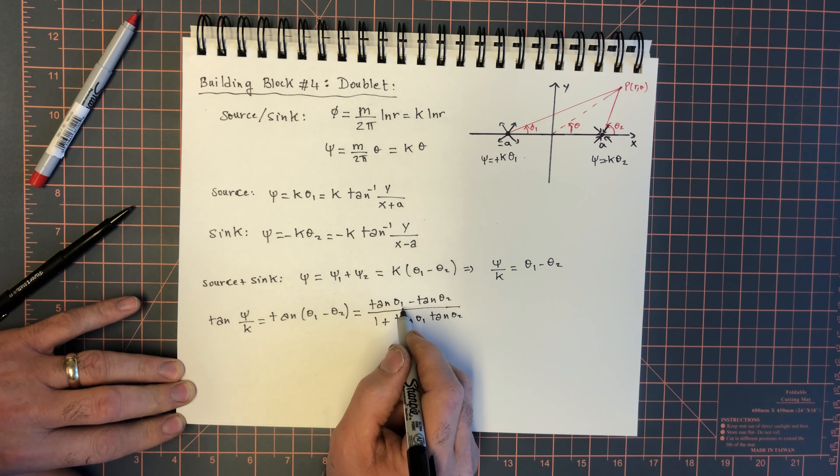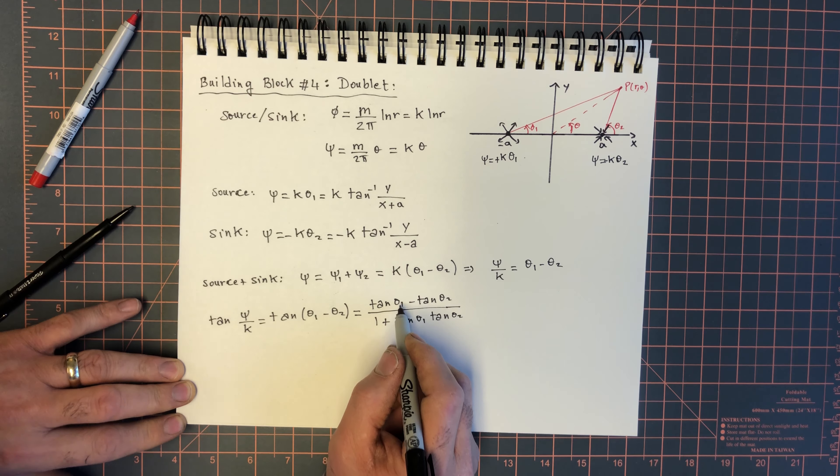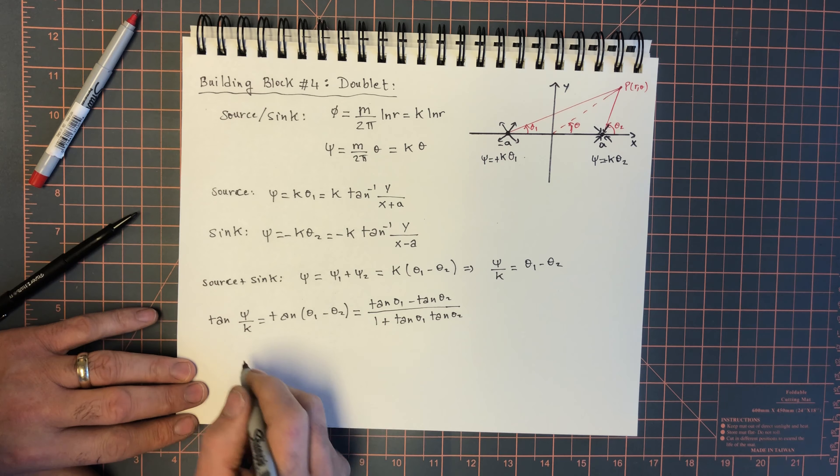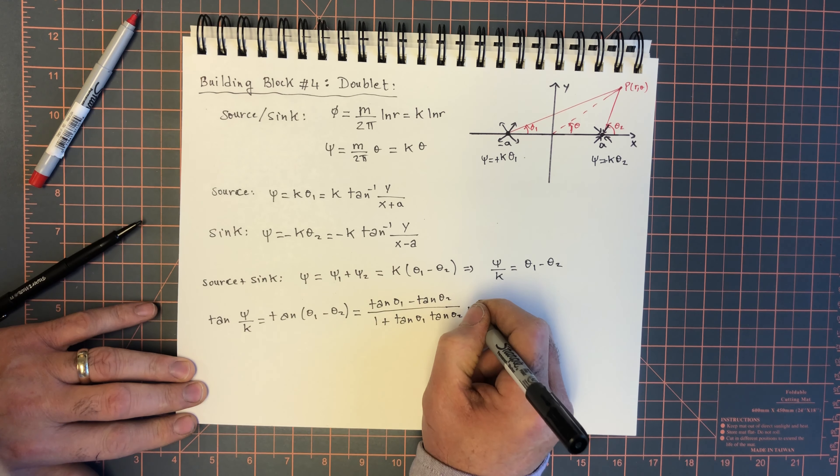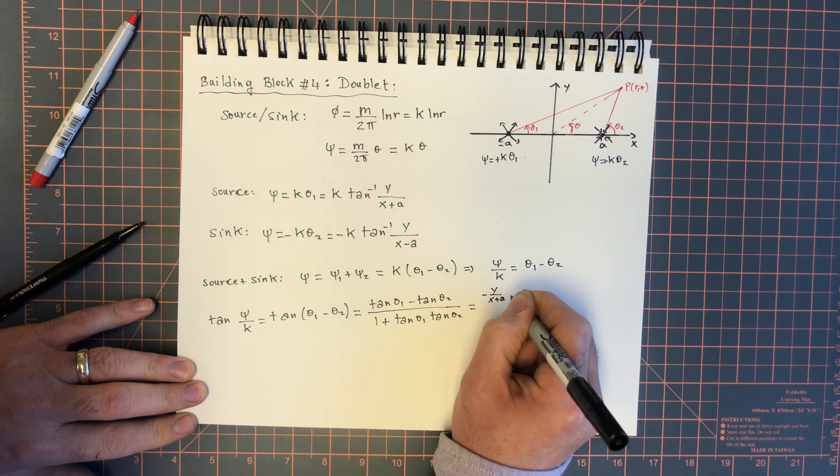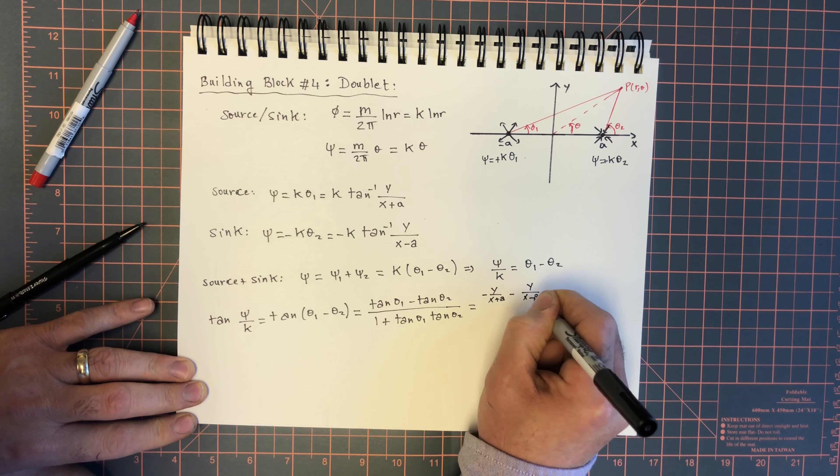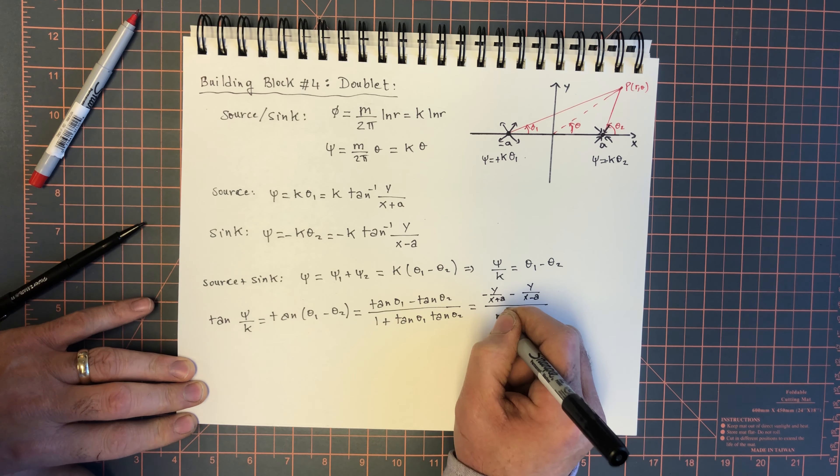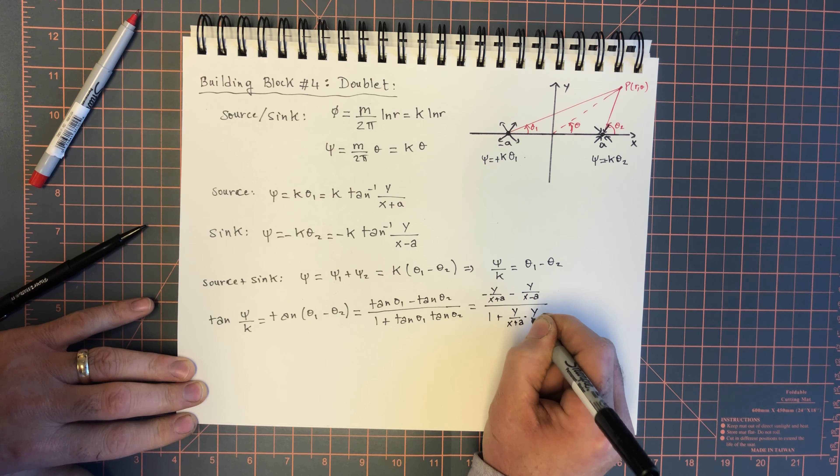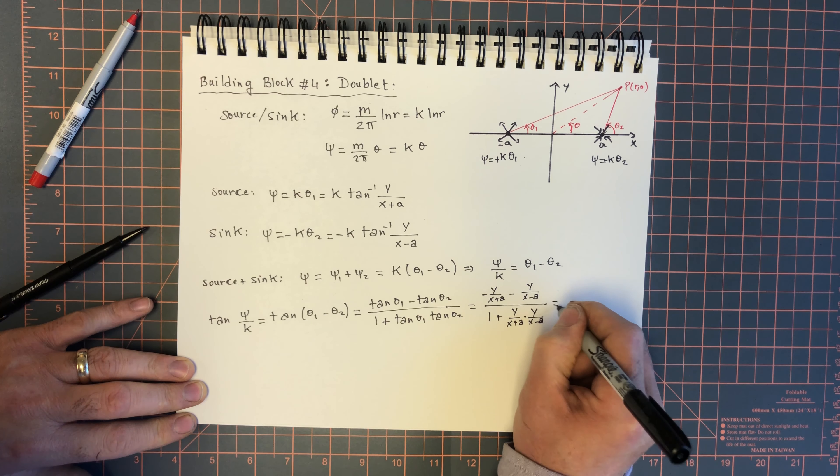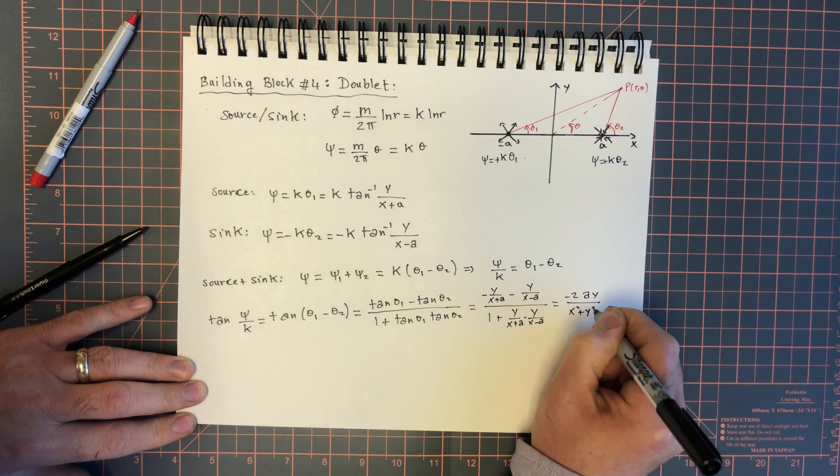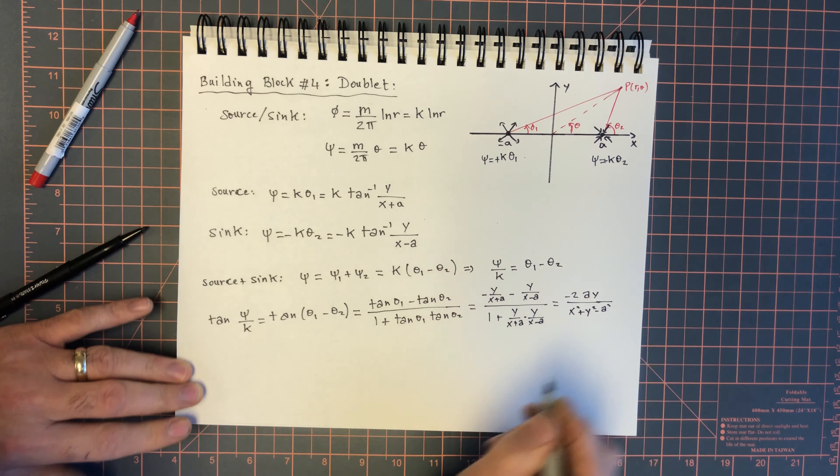That's equal to the tangent of the difference, the difference of the tangents over 1 plus tan theta 1 tan theta 2. We can expand. If theta 1 is arc tan y over x plus a, etc., we get y over x plus a minus y over x minus a over 1 plus y over x plus a times y over x minus a. And that gives us minus 2 ay over x squared plus y squared minus a squared.